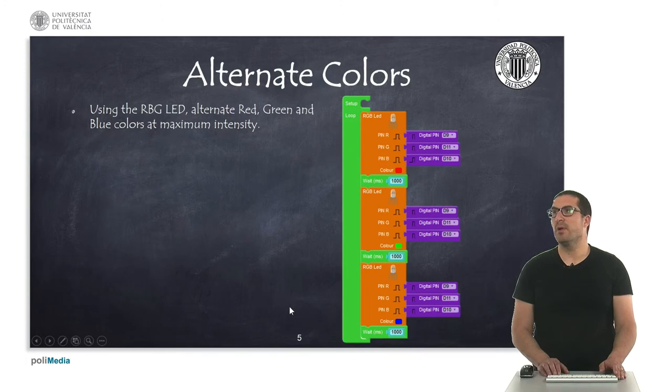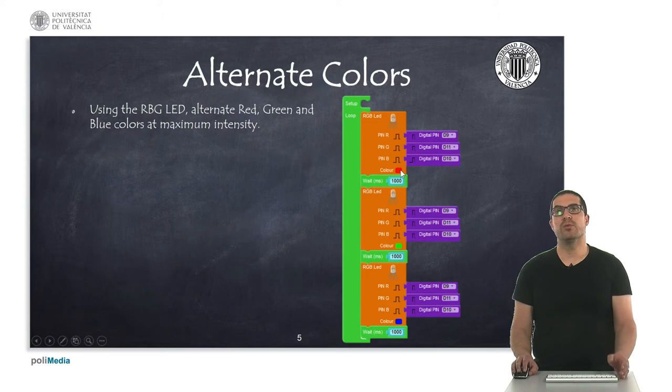In this first example, what we're doing is we're using the RGB LED instruction, so we can select the color here, and we can choose whatever color will be listed, and then we specify the pin numbers in here where the RGB LED is connected to.